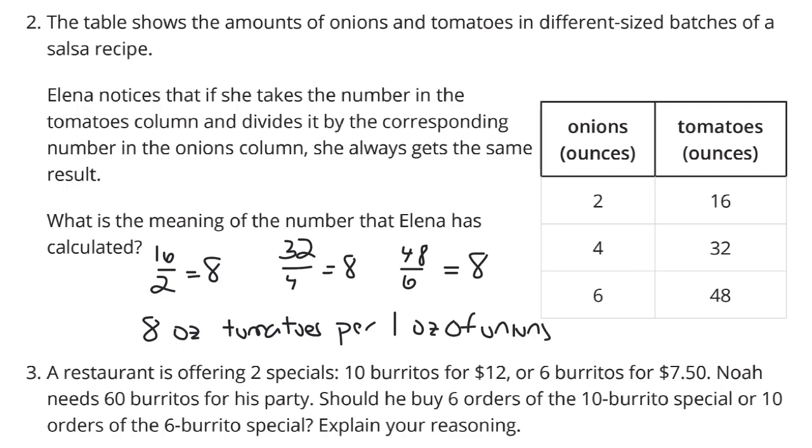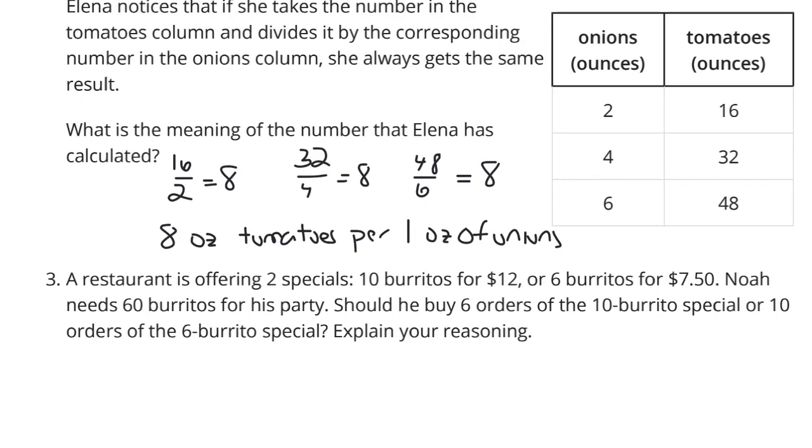Because all of these, 16 over 2, 32 over 4, 48 over 6, are equivalent ratios. And equivalent ratios have to have the same unit rate. Alright, question 3.